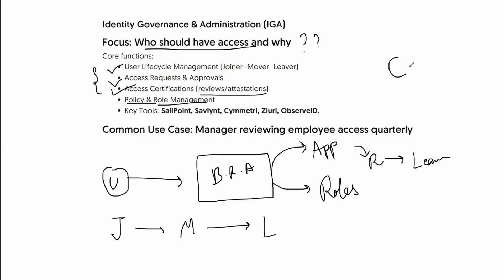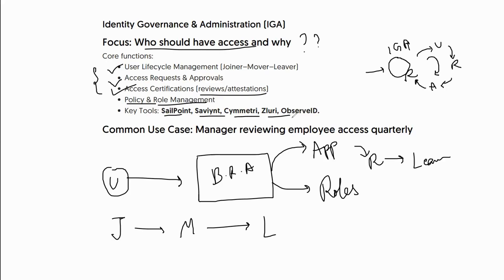Everything is facilitated through policy and role management. Policy is the heart of any IGA system — without policy, none of the functions like getting roles or revoking access work. The entire access lifecycle cycle exists because of policies designed to support it. Key IGA tools include SailPoint, Saviynt, Omada, Lurie, and ObserveID, among others. It's an evolving market. A common use case is a manager reviewing employee access quarterly, which falls under access reviews.